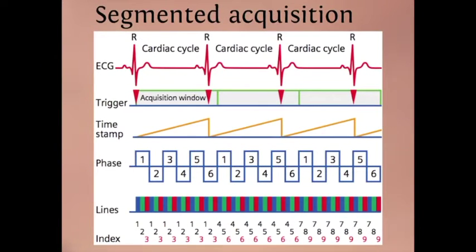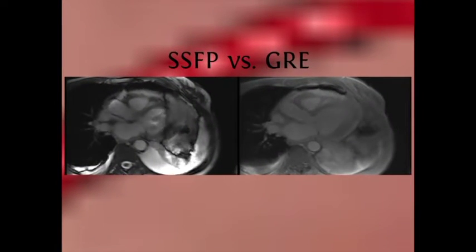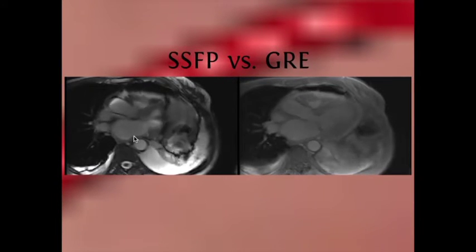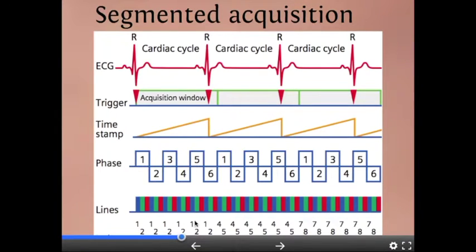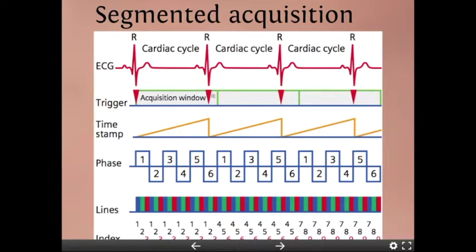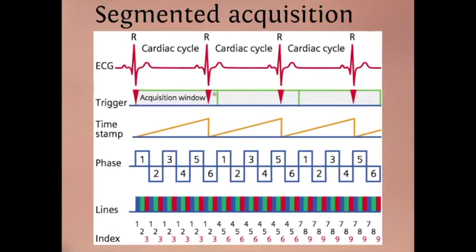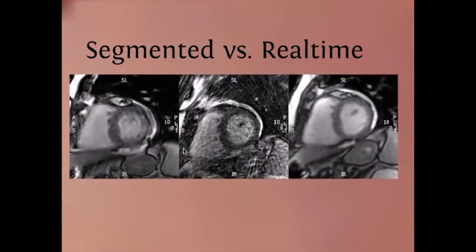The segmented acquisition takes somewhere between 8 and 15 heartbeats to acquire data, but it looks like we're seeing one heartbeat — we fuse all that data into one representative heartbeat to get the spatial resolution we need. Different phases have different lines of K-space per phase. There's no way to fill all lines for all phases in one cardiac cycle, so the strategy is to decrease lines of K-space. Here we have images that are segmented and some that are real-time.